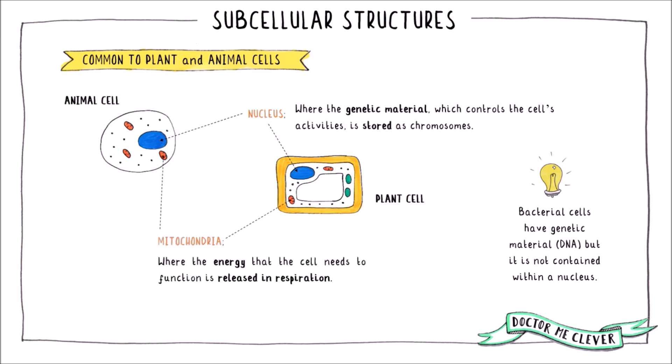Plant and animal cells also have mitochondria. This is where the energy needed for the cell to function is released during the process of respiration.